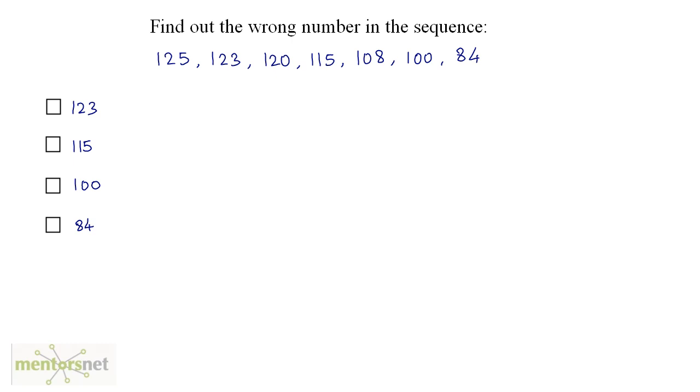What could be the answer of this question? To obtain the second number from the first number, we need to subtract 2 from it. So 125 minus 2 is 123. 123 minus 3 is 120. 120 minus 5 is 115. 115 minus 7 is 108. And 108 minus 8 is 100.